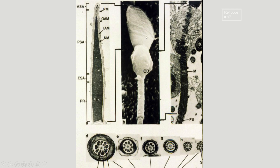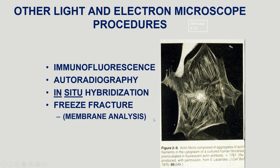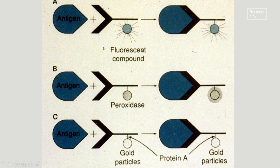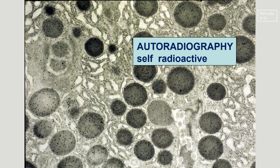This is a sperm of different species — this is a conventional EM and this is a scanning EM of that. There are also a lot of different types of electron microscopy people can use if they want to stain for specific things. Immunofluorescence is when you want to mark a specific antigen — a specific protein or specific segment of DNA — using fluorescent compounds, gold particles, and similar methods. You can also use autoradiography, which makes parts of the cell stand out as they absorb radioactive particles.